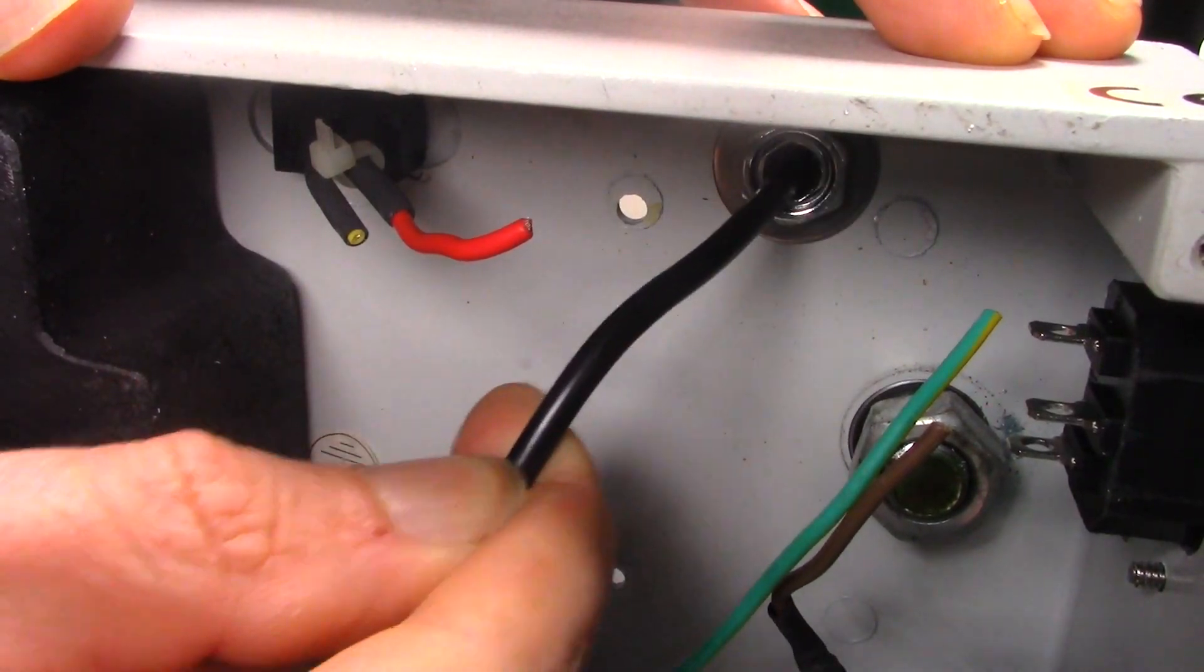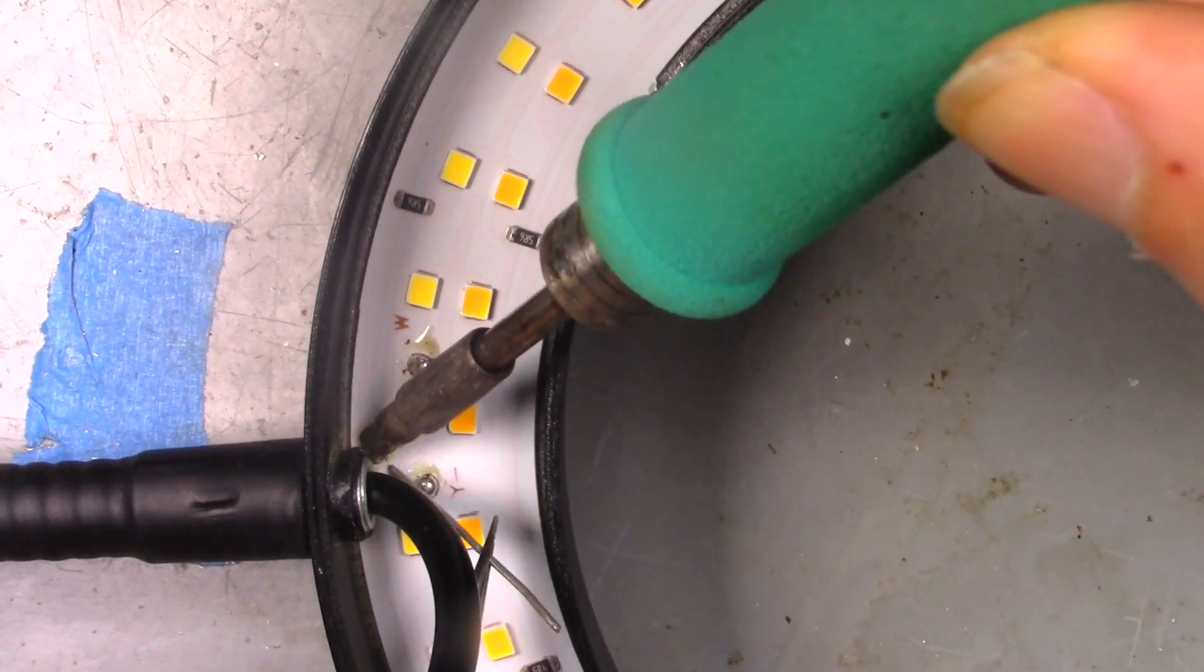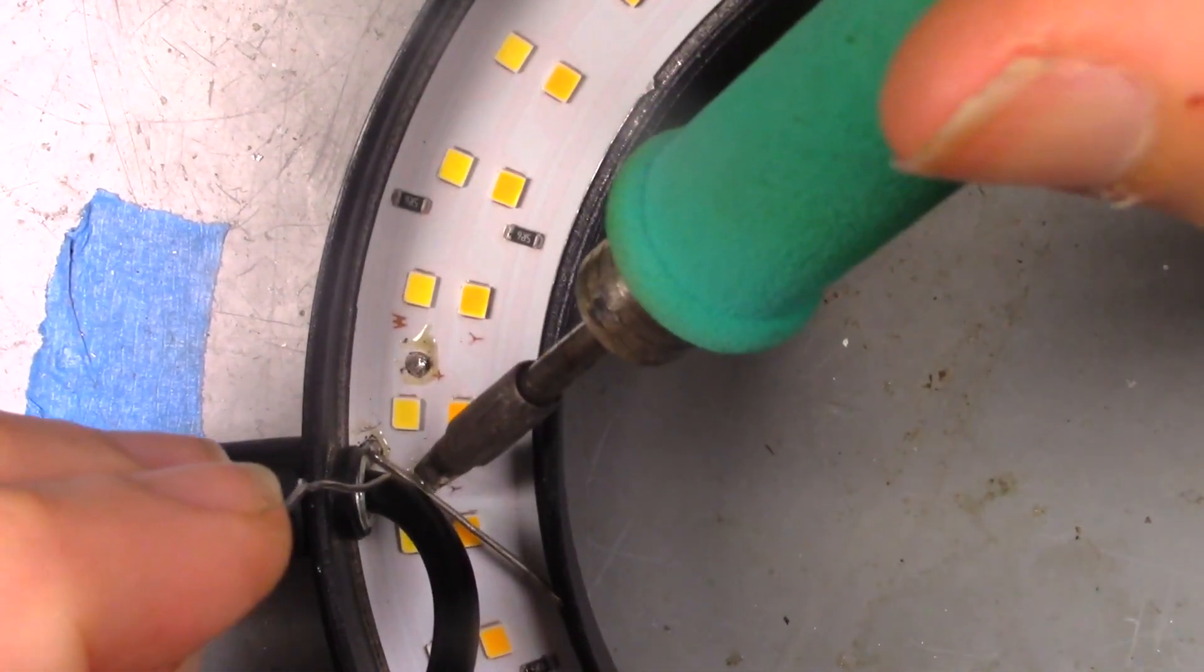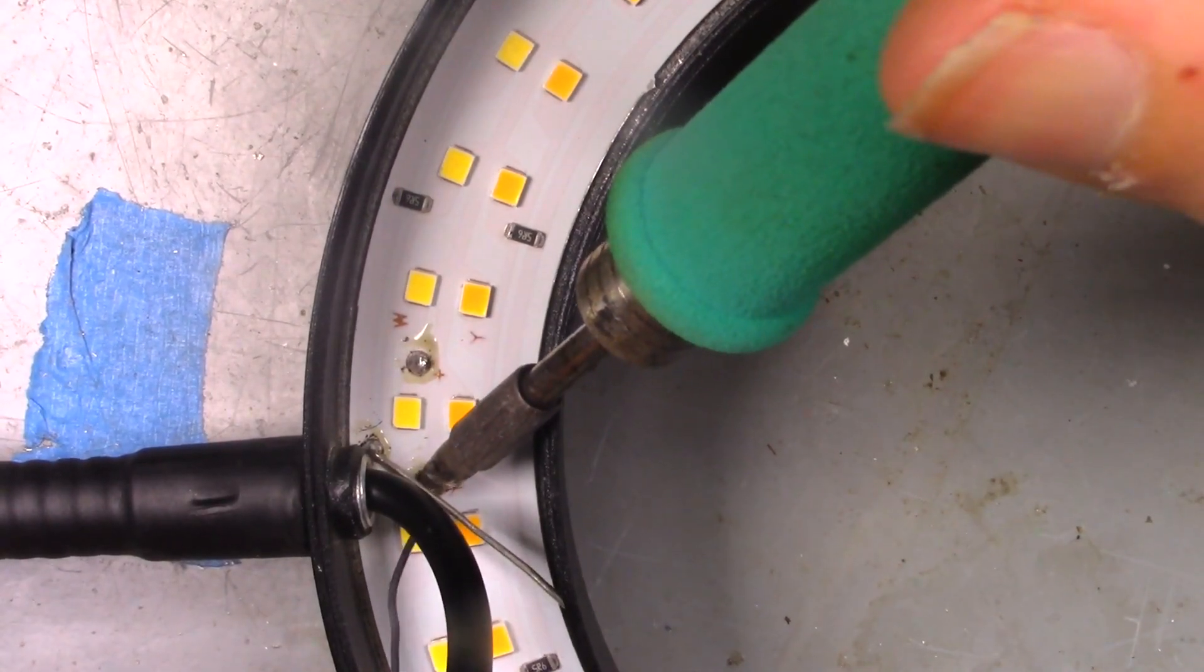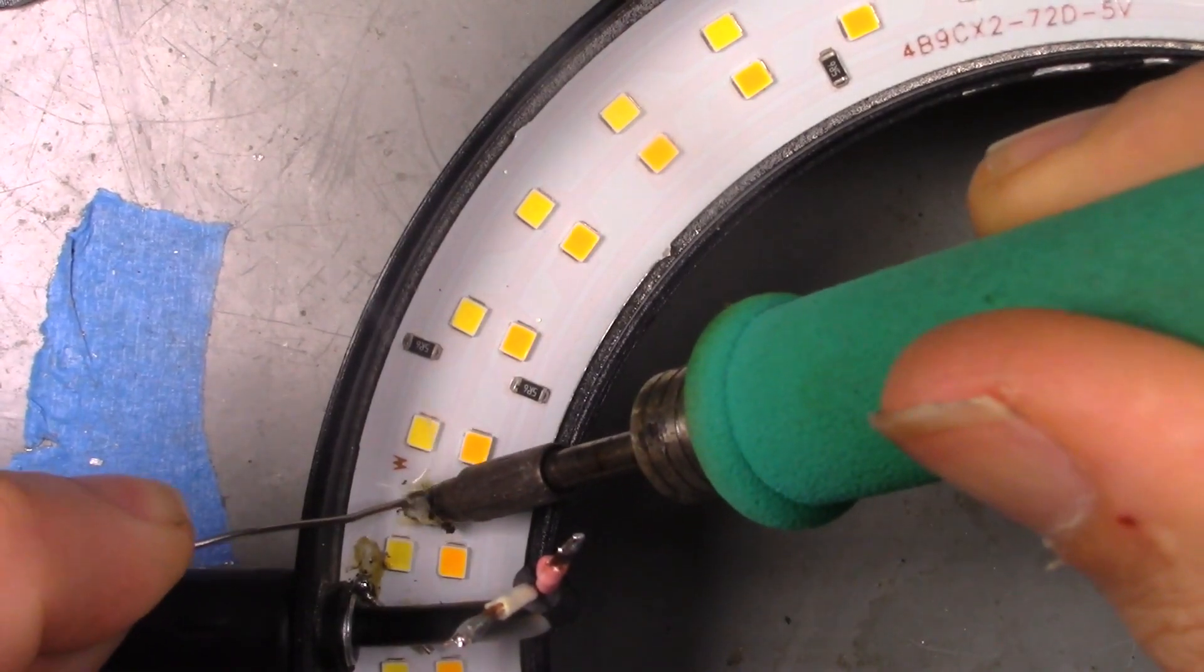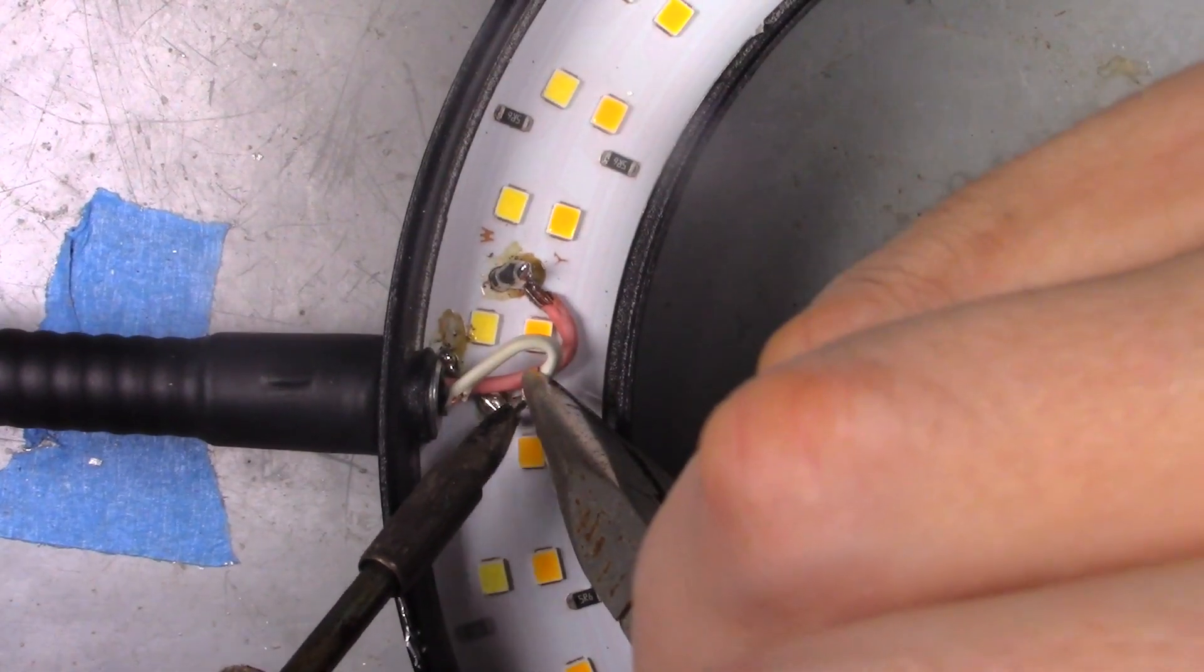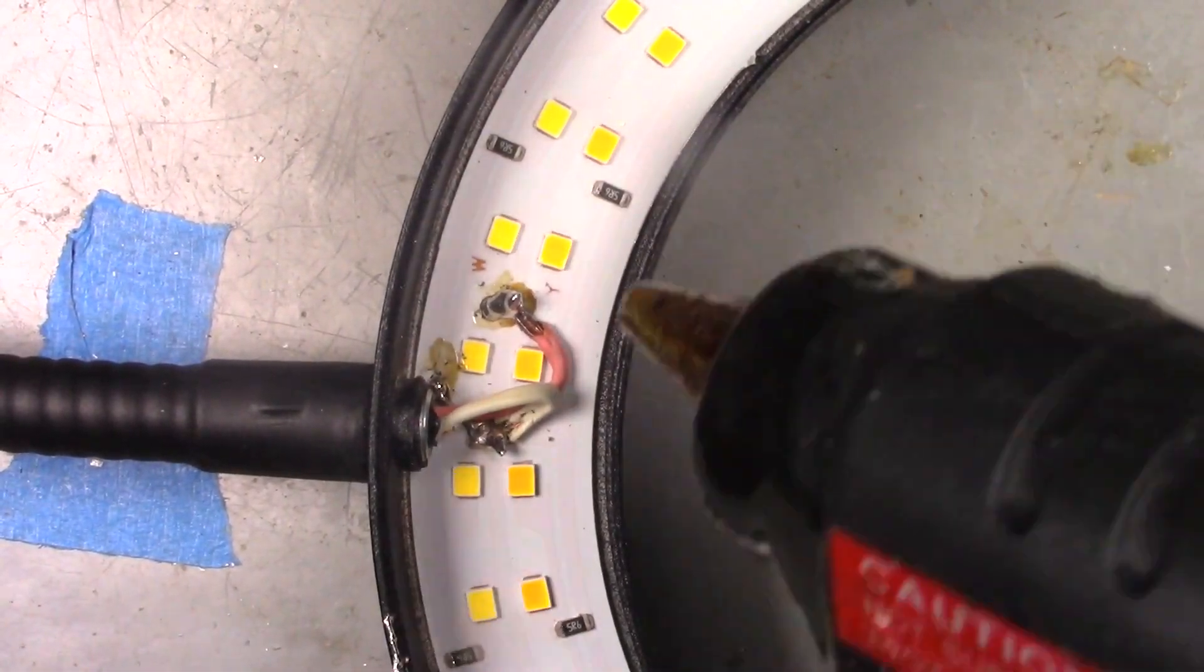Threading the cable through the gooseneck. And soldering the wires into position on the light ring. For those of you playing at home, this light ring was common positive. So I bridged the two negatives together so all the LEDs would come on at once. A little bit of hot glue to secure everything in place.